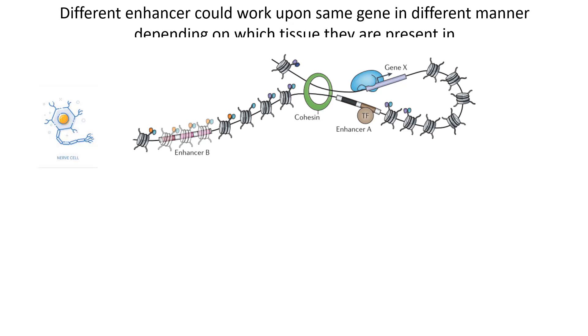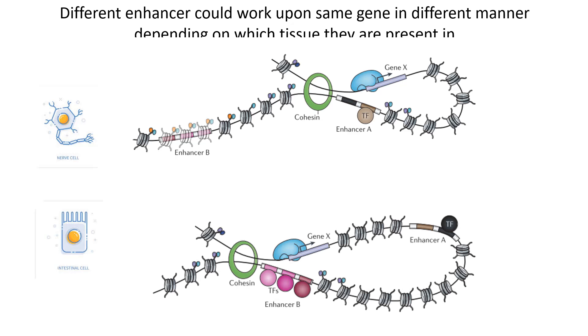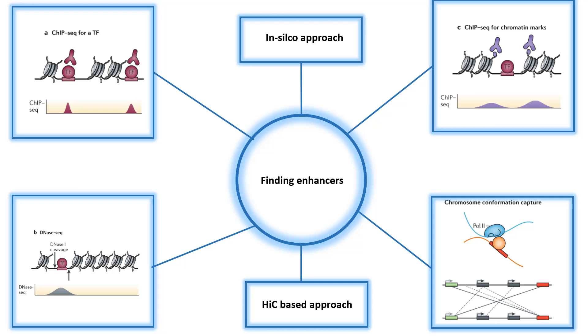Different enhancers could influence the gene in a differential manner depending upon which tissue they are present in. For example, inside a neuron there is expression of gene X which is very important for survival of the neuron, so gene X is modulated by enhancer A here but not by enhancer B. But let's say we consider another cell, an intestinal cell, and here we see a different scenario. Enhancer A and enhancer B both regulate the expression from gene X. So depending upon the tissue, the enhancers that regulate the transcription could be different, and that leads to the heterogeneity of gene expression in different tissues.